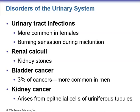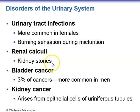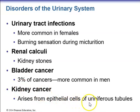Disorders of the urinary system include urinary tract infections (UTIs), which are more common in females due to the shorter urethra. UTIs cause a burning sensation during urination; they should be treated promptly to prevent the infection ascending to the kidneys. Renal calculi (kidney stones) are very painful to pass. Bladder cancer makes up 3% of cancers and is more common in men. Kidney cancer arises from the epithelial cells of the uriniferous tubules.